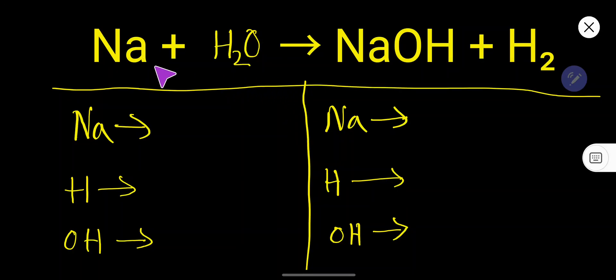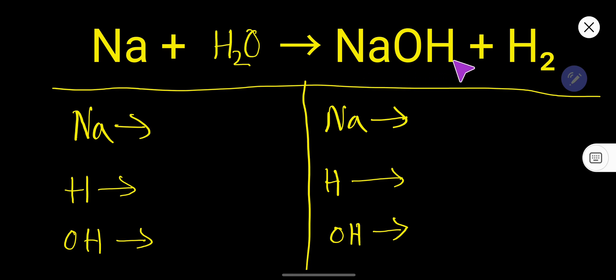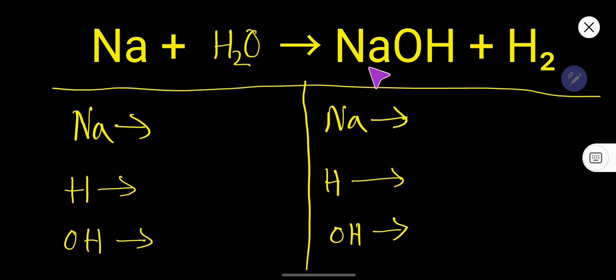How to balance Na plus H₂O, then NaOH plus H₂. So that is sodium reacting with water, and we get sodium hydroxide and hydrogen.